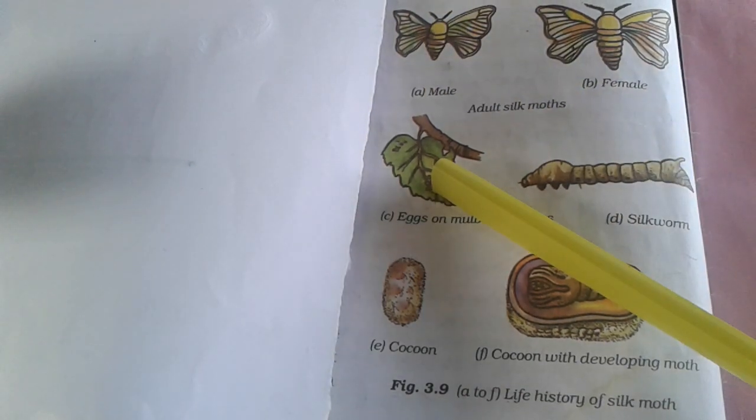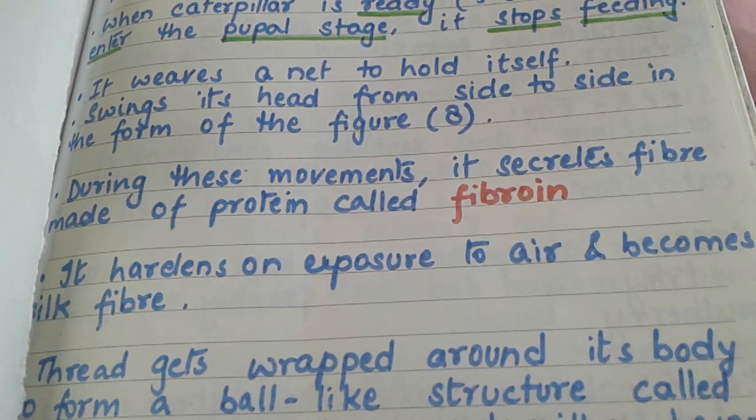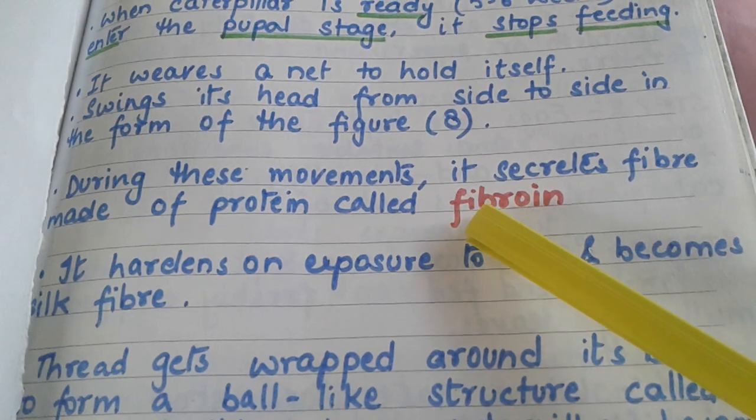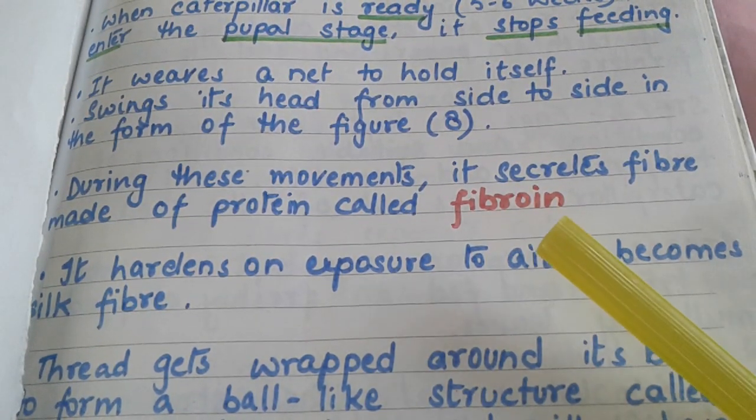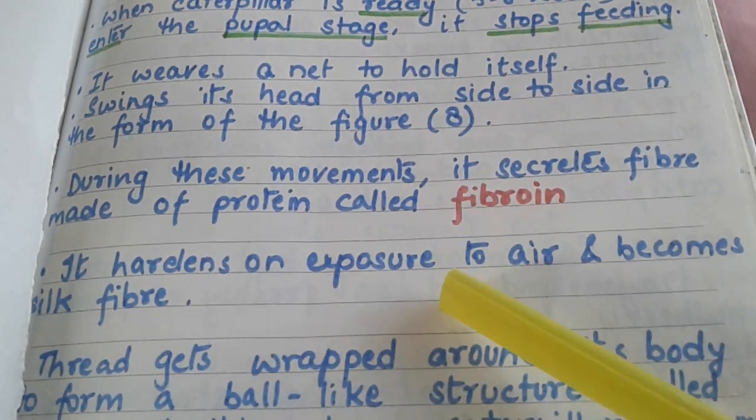...it will stop feeding on these leaves before entering the pupal stage. It will weave a net to hold itself, and in this manner it will swing its head from side to side in the figure of eight. During these movements, it will secrete a fiber from its salivary glands — a sticky fluid that is a protein named fibroin.